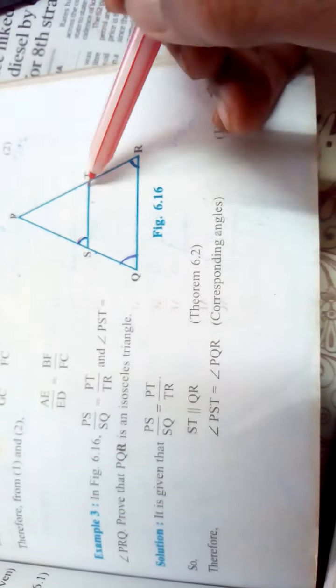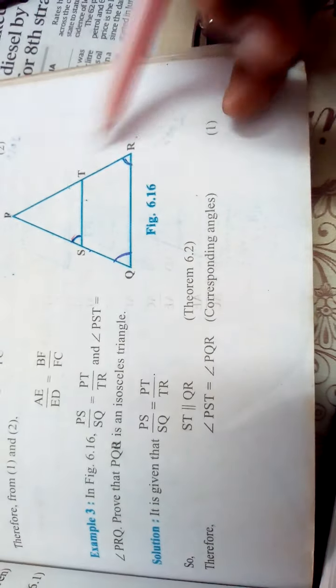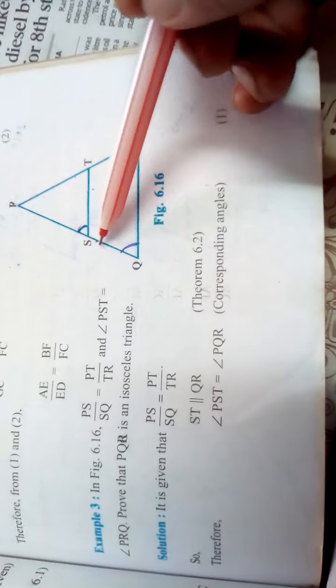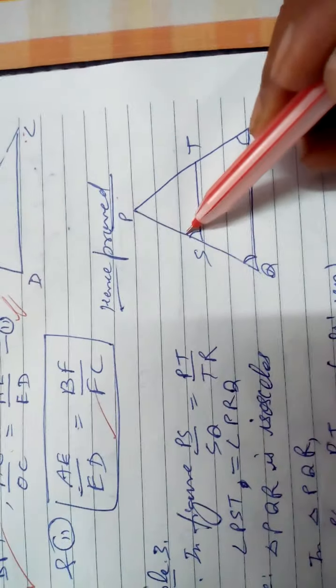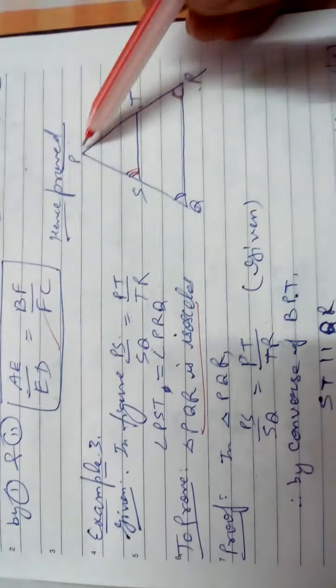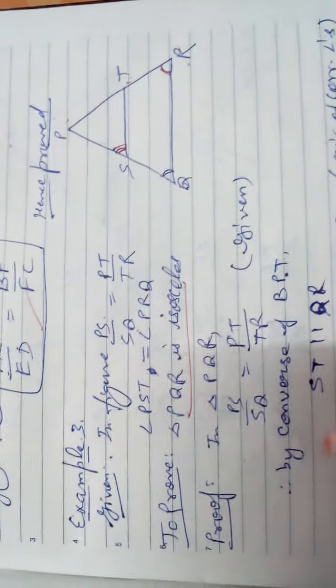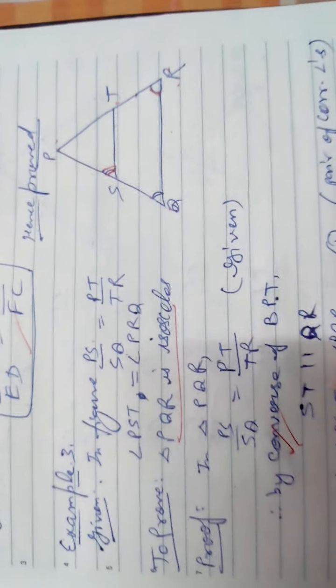Example 3: In triangle PQR, ST is a line segment such that angle PST equals angle PRQ. It is also given that PS/SQ = PT/TR. You want to prove that triangle PQR is isosceles. Since PS/SQ = PT/TR is given, by the Converse of BPT, ST is parallel to QR.